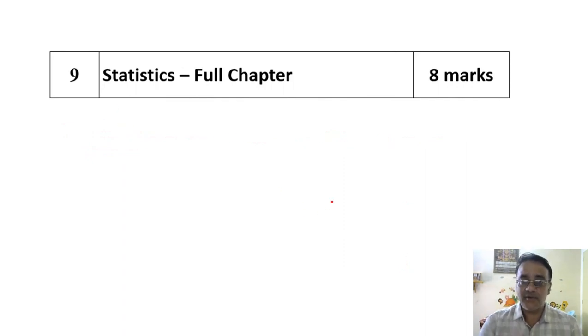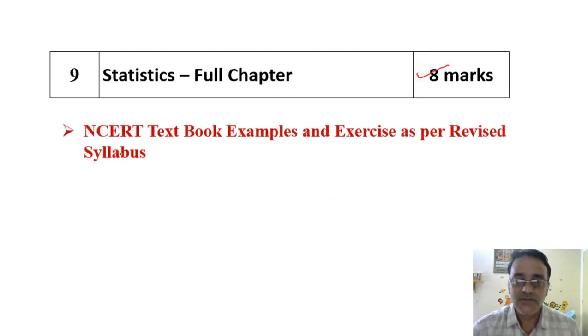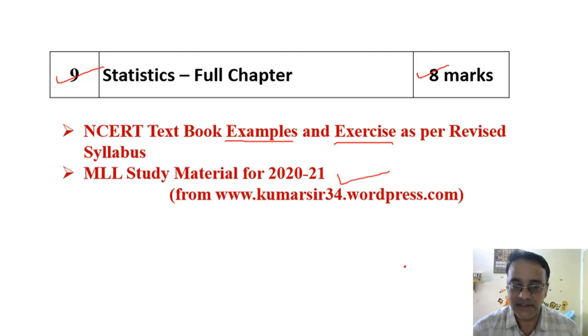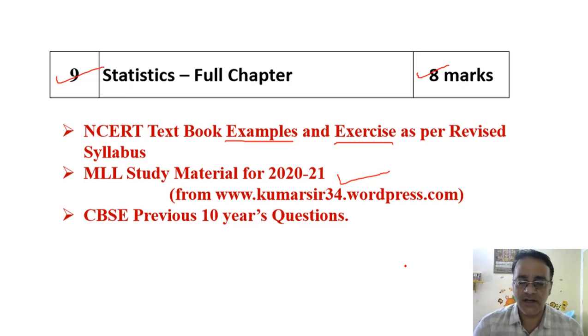Next, Statistics and Probability together 11 marks are there. So sometimes statistics ke zyada questions hote hain, kabhi probability ke questions hote hain, so together I am going to take 11 marks. Last year ke sample paper ke basis par this was eight marks. NCERT textbook all examples and exercise questions - in this topic do section removed ho gaya hai, one is last og wala jo questions hain that exercise has been removed, and the next one is step deviation method. But still students can use step deviation method if they wish. So now this chapter is also become shorter, so you can complete this chapter with full confidence. You have to complete some questions given in my study material and CBSE previous 10 years questions. If you do this much you can easily score full marks from Statistics.